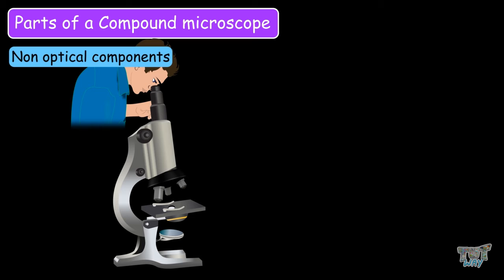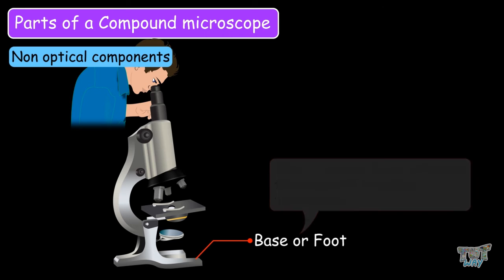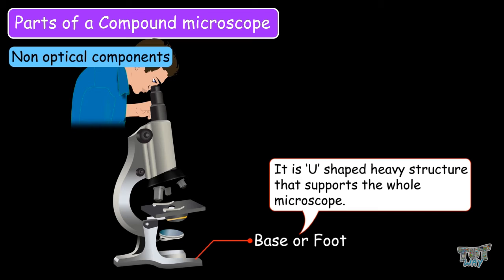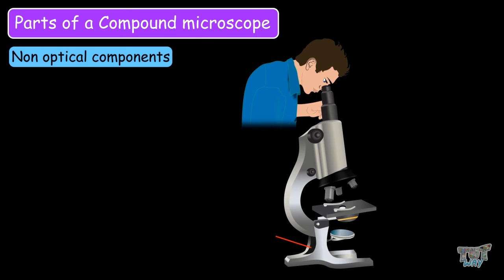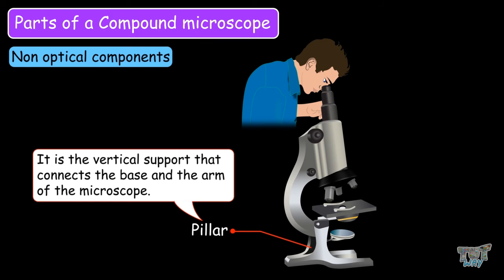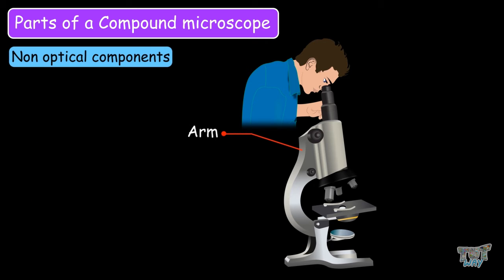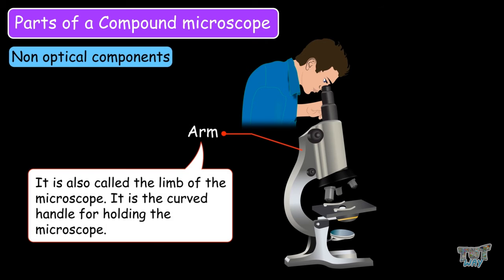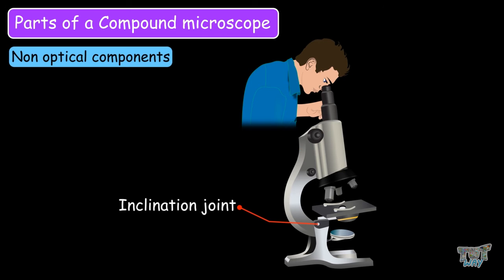The first non-optical component is the base or foot. It is a U-shaped, heavy structure that supports the whole microscope. Next is the pillar — the vertical support that connects the base and the arm of the microscope. The arm, also called the limb of the microscope, is the curved handle for holding the microscope.